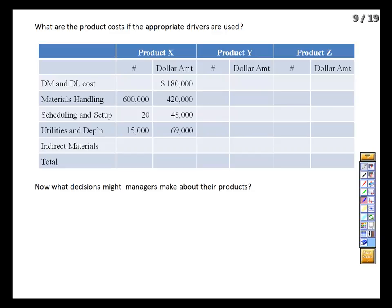Utilities will be $69,000 and indirect materials will be $26,000. So we've now got a new cost for our inventory — it's costing us $743,000 to produce that inventory. Our old cost was about $795,000 or so, so this is a pleasant surprise.